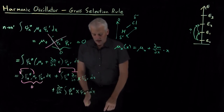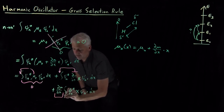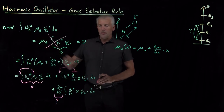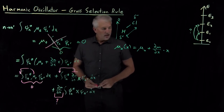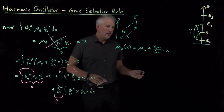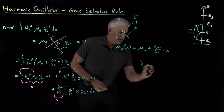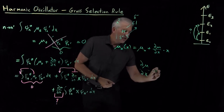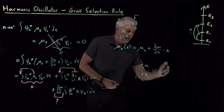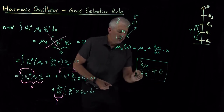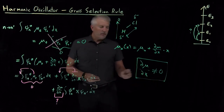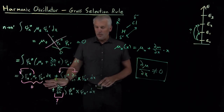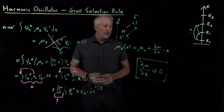This leads to the gross selection rule: dμ/dx — the rate of change of the dipole moment as I change the bond length — must be non-zero in order for a molecule to absorb light and change its vibrational state. If a molecule has dμ/dx equal to zero, then both terms will be zero, the transition dipole moment will be zero, and all vibrational transitions are forbidden.